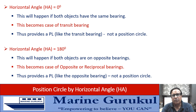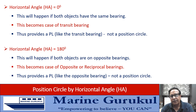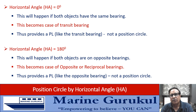We have dealt with all possible cases of horizontal angle: equal to 0°, less than 90°, equal to 90°, greater than 90°, and equal to 180°. The horizontal angle can never exceed 180°, so this covers all possibilities as far as position circle by horizontal angles is concerned.